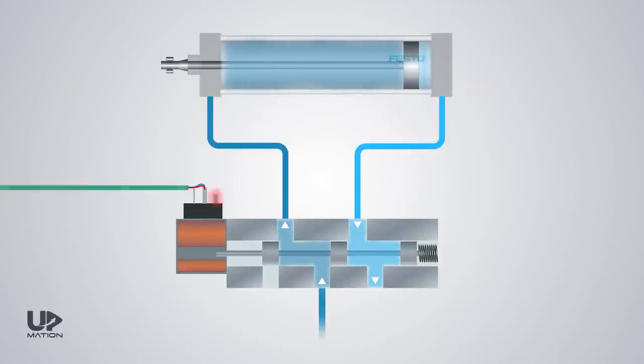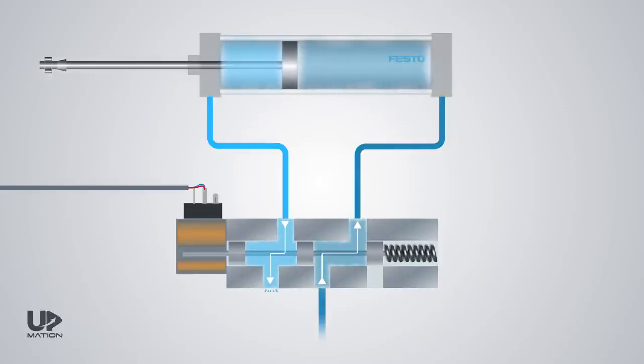As soon as the PLC removes the command, the spring will return the spool to its first position and the air path will be changed. Therefore, the air behind the piston will be purged into the atmosphere via the valve exhaust port.